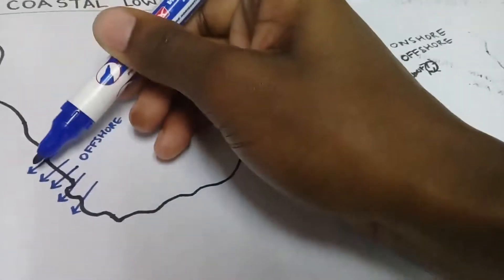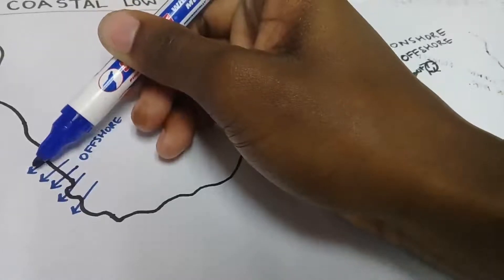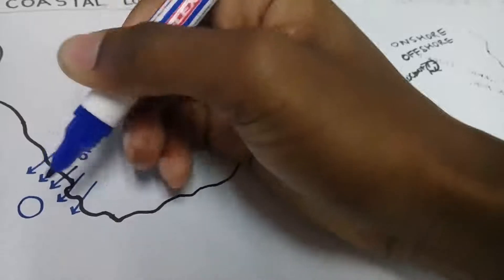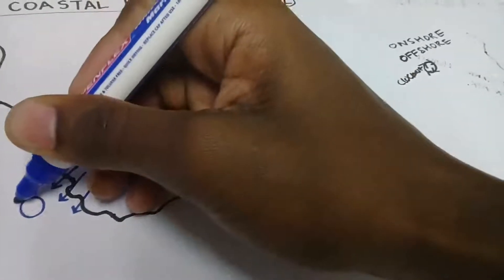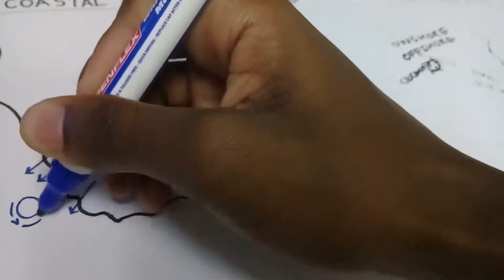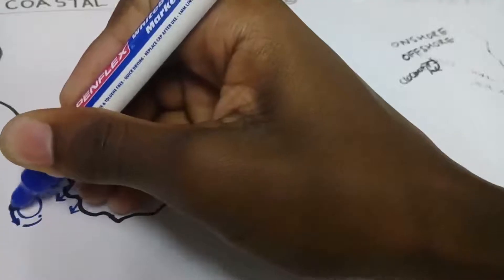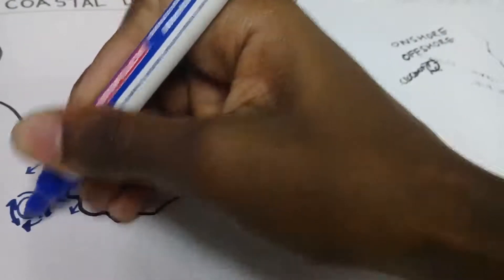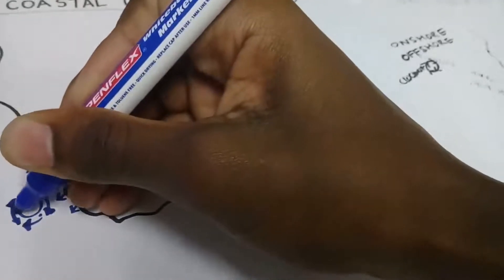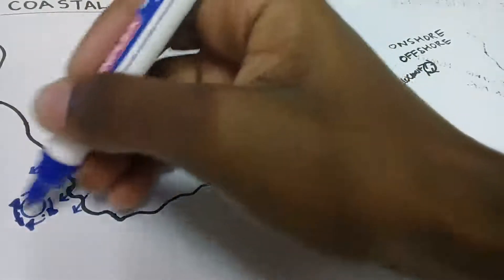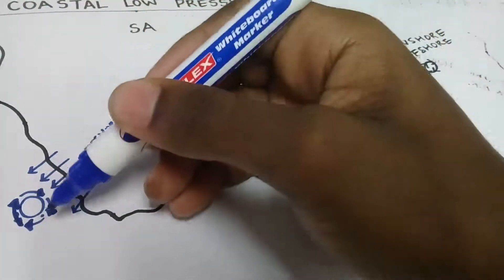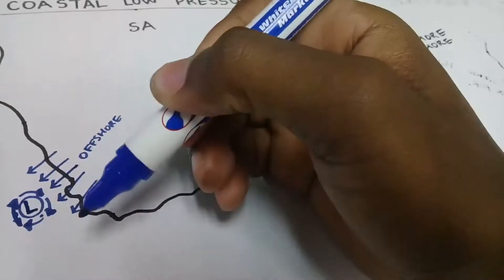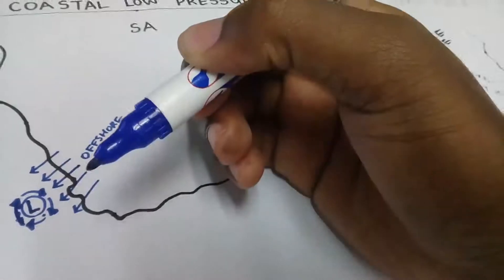As you understand, these winds are going to cause a clockwise direction of air movement. This will cause a clockwise direction, and a coastal low will form in the west part of South Africa, along the west coast. And this coastal low is not going to be stable in this position — it is going to move along the coast.